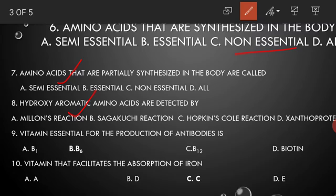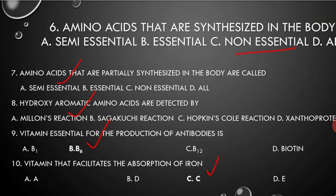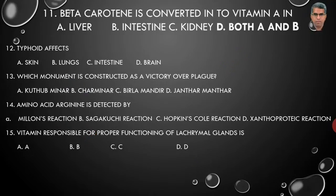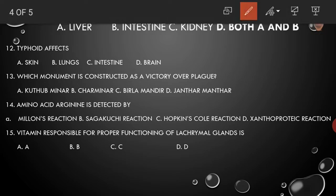The vitamin essential for the production of antibodies is B6. The vitamin that facilitates the absorption of iron is Vitamin C. Beta-carotene is converted into Vitamin A in both the liver and intestine, so the answer is both A and B.